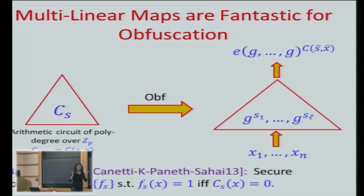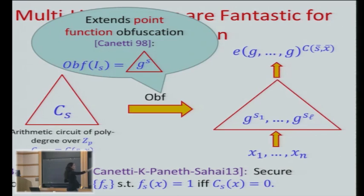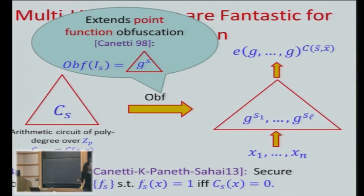But it seems pretty inherent. Because of the structure of the multilinear map — that it does algebraic operations over Zp and is bounded to polynomial degrees — this seems like the limit of what you can do with this technique for obfuscation. Now let me just note, as a curious note, that this really extends what was known before. The original obfuscation for point functions — work of Canetti from 1998, even before obfuscation was formally defined — used just a group: take G to the S, and given input X, check whether G to the X equals G to the S.